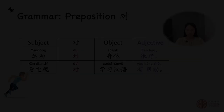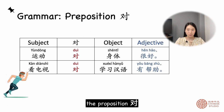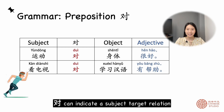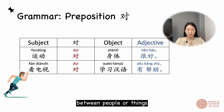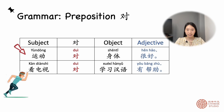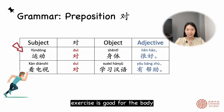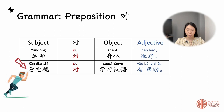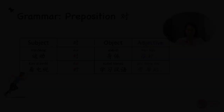The second grammar point is the preposition 对. 对 can indicate a subject-target relation between people or things. For example, 运动对身体很好 — exercise is good for the body. 看电视对学习汉语有帮助 — watching TV is helpful in learning Mandarin.